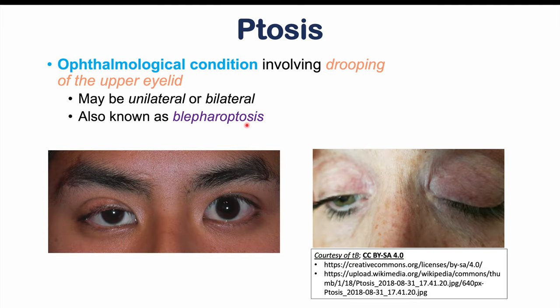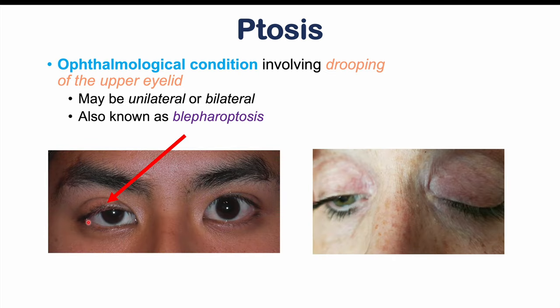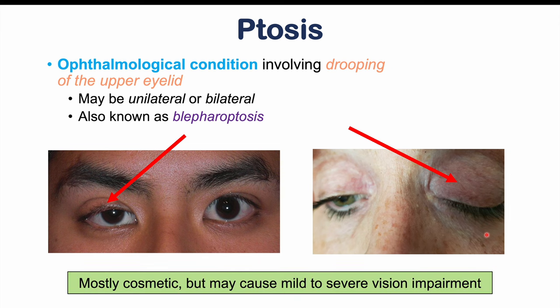Here are some images of what ptosis looks like. In this image, this is a unilateral ptosis, and this is actually a bilateral ptosis with one side more severe. Most of the time ptosis is a cosmetic issue, but it can cause mild to severe vision impairment or vision blurriness.